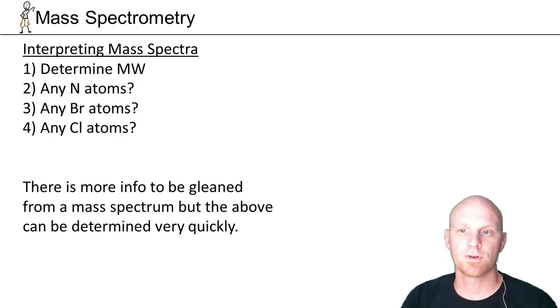I just want to do a quick overview of what we've discussed. When you're interpreting a mass spectrum, there is some information you can get in less than 10 seconds. Find your parent peak and get your molecular weight. If it's an odd number, you know you've got an odd number of nitrogens. Then look for an M+2 peak.